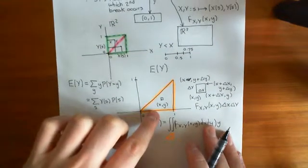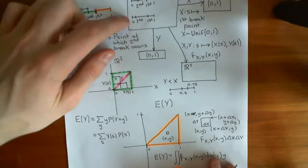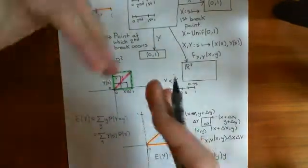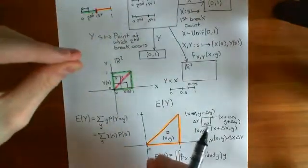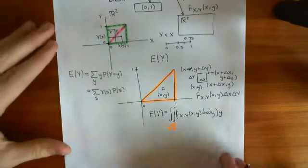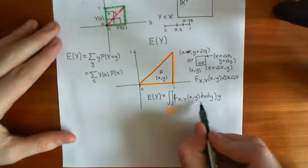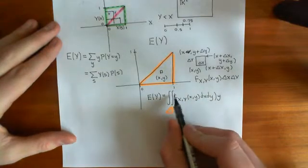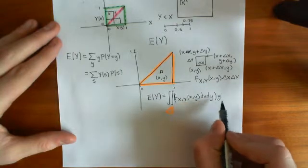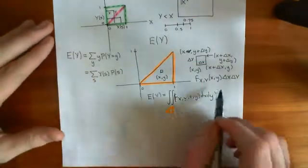Every point, little x and y in the triangle, has a corresponding point in the abstract probability space, and every point in the abstract space has a corresponding little x and y in the triangle. They're in bijection — a one-to-one correspondence. So by doing that integral, I go through every single outcome in our abstract probability space, take the probability of that little outcome, which is the probability density function times an infinitesimal little area, and then times it by its Y value.